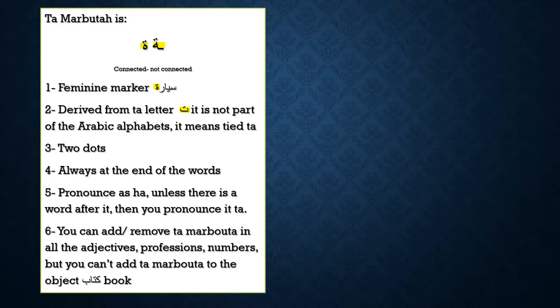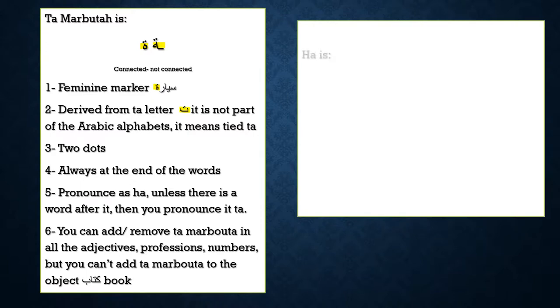You can add or remove ta marbuta in all the adjectives, professions, and numbers. But you cannot add ta marbuta to objects — for example, the word kitab (book). Book is masculine and it remains masculine. So we have some rules for when you can add or remove ta marbuta, and I have covered all these rules in my previous videos under the 101 level playlist. Now let's talk about ha.